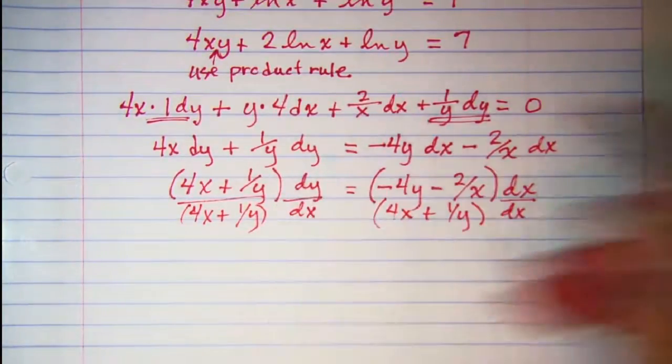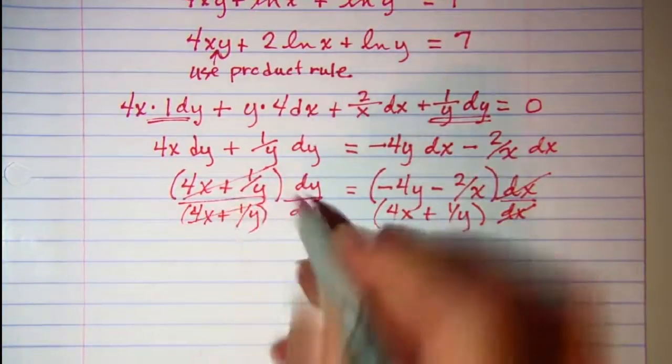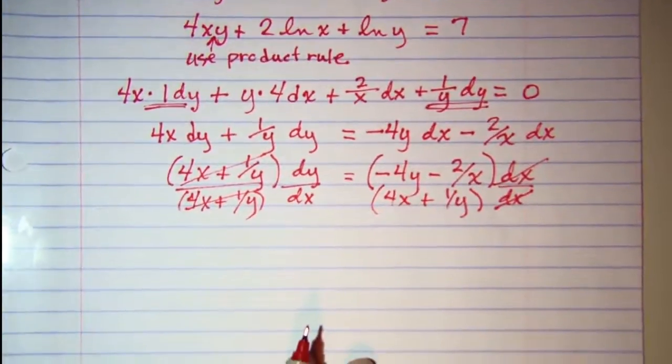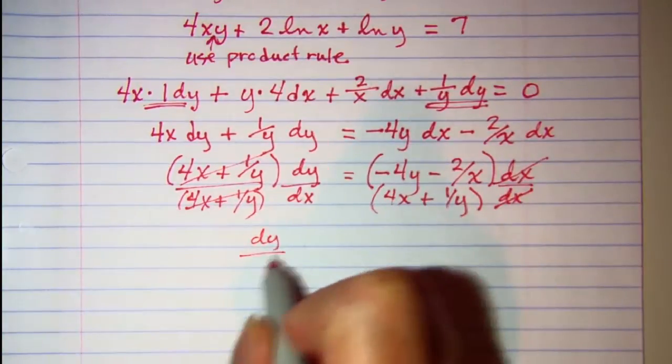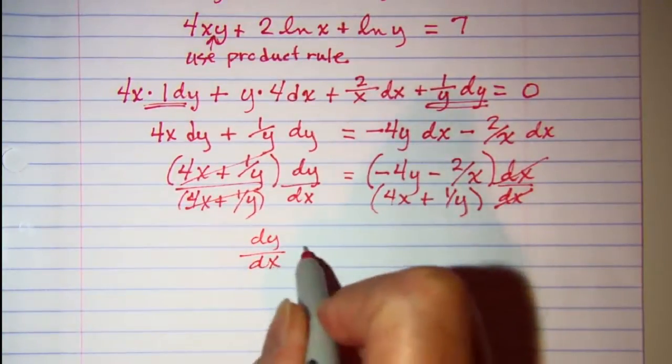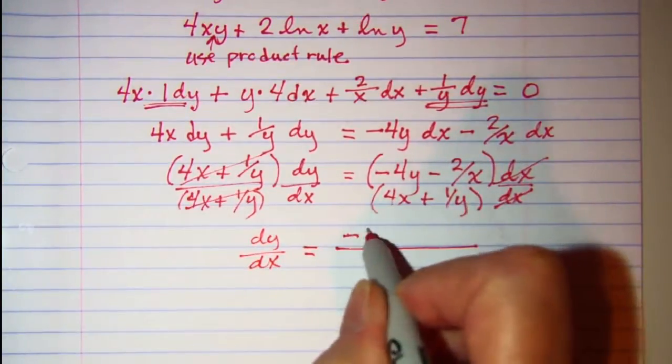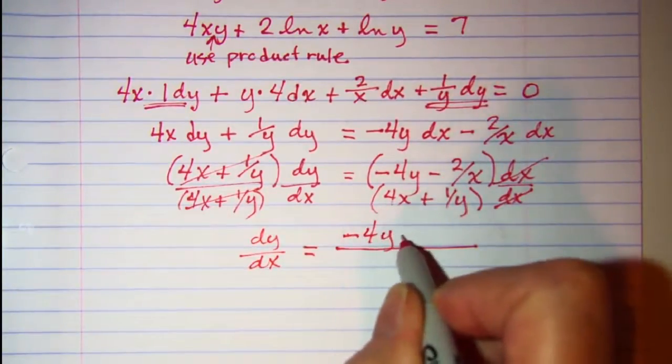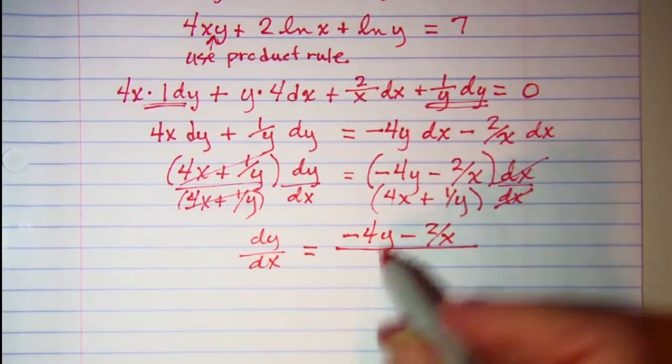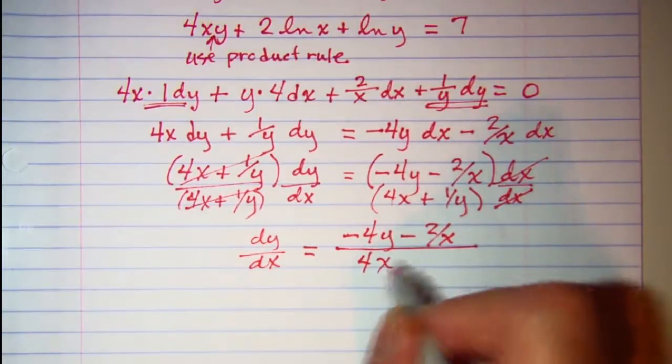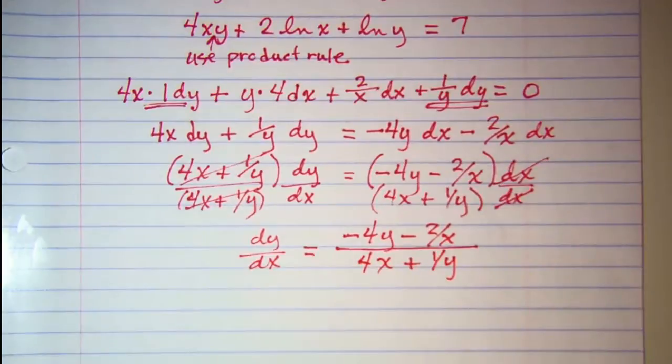So these cancel. And I have dy/dx equals negative 4y minus 2 over x in the numerator and then 4x plus 1 over y in the denominator.